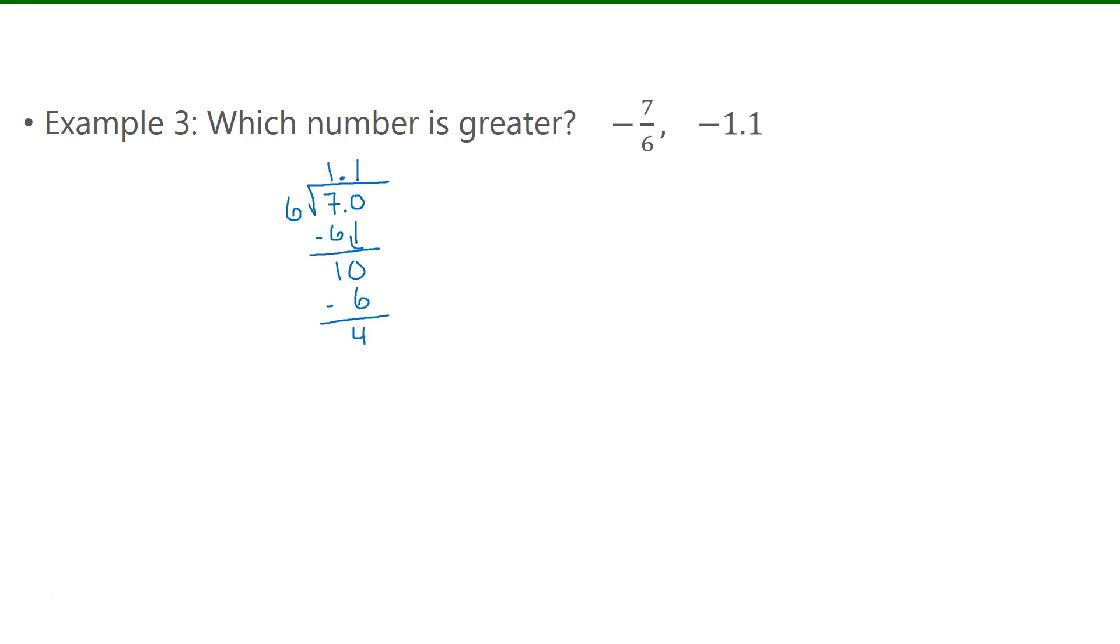Subtract, I get a 4. I'm going to have to bring down another 0 here. It goes in 6 times. And if I subtract, I get a 4 again. I'm going to end up really with 6 repeating here. So what I have is negative 1.16 repeating, and negative 1.1.